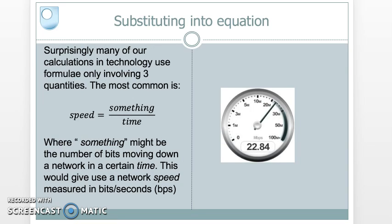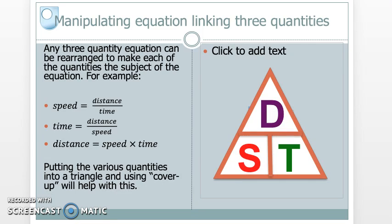In our calculations, surprisingly, most of them involve three quantities. You'll be surprised in our subject how many formulae you'll come across which only involve three quantities. Usually they're all of the form of something like speed equals something divided by time, where something might be the number of bits moving down a network over a certain period of time. This would give us obviously a network speed measured in bits per second. Now any of these quantities in an equation, we can always rewrite it so that one of those quantities become the subject.